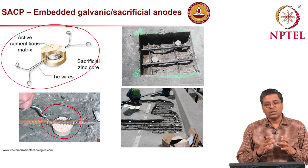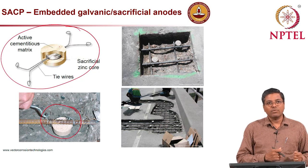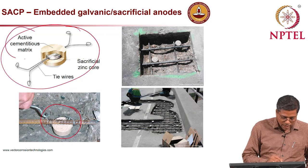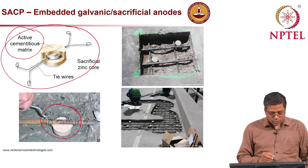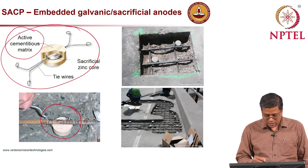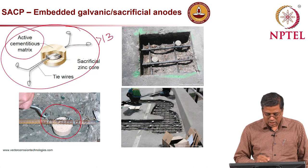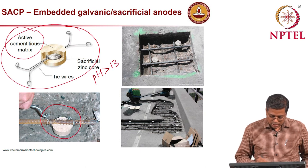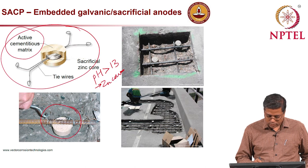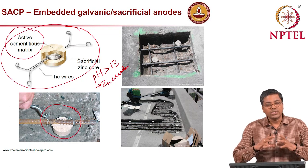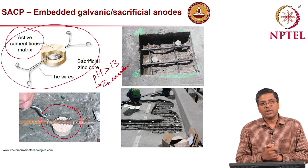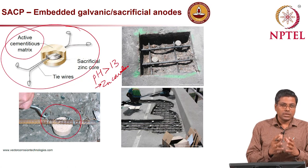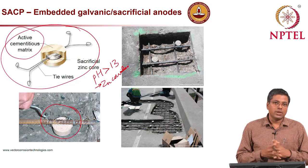A typical anode system has a zinc disc at the center covered by an encapsulating mortar. Many anodes on the market are simply cement packed around a zinc disc — that does not work. The encapsulating mortar must have an active cementitious matrix. The zinc element needs a pH greater than 13 to corrode — if pH is greater than 13, zinc corrodes and protects the steel.